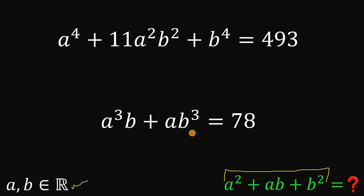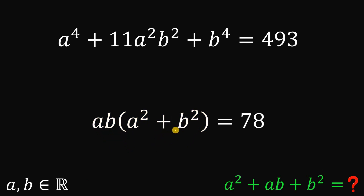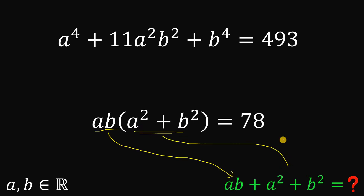Notice that in the second equation, if we factor out ab on the left-hand side, we get ab multiplied by (a² + b²). We want the value of a² + b² + ab, so this factored form is a hint to answer this kind of question — it contains both ab and a² + b² together.